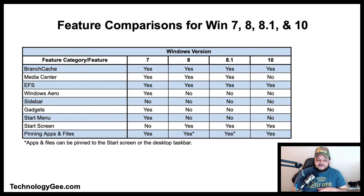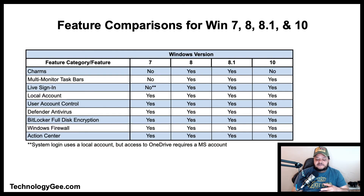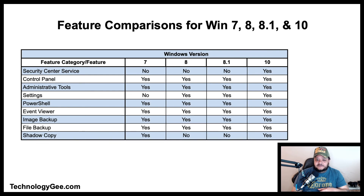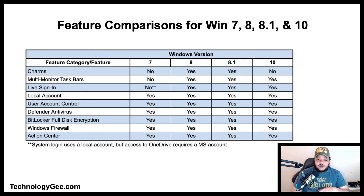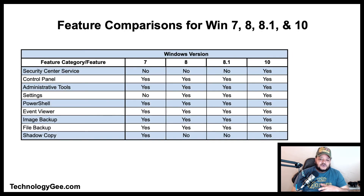To wrap this video up, what I have on the screen are a few graphs showing feature comparisons for Windows 7, 8, 8.1, and 10. I'm not going to outline every single difference and feature from each version — what you can do is go to my website TechnologyG.com where these graphics will be available for your viewing. In summary, we have briefly talked about some of the various versions of Microsoft Windows and quickly glanced over their features.